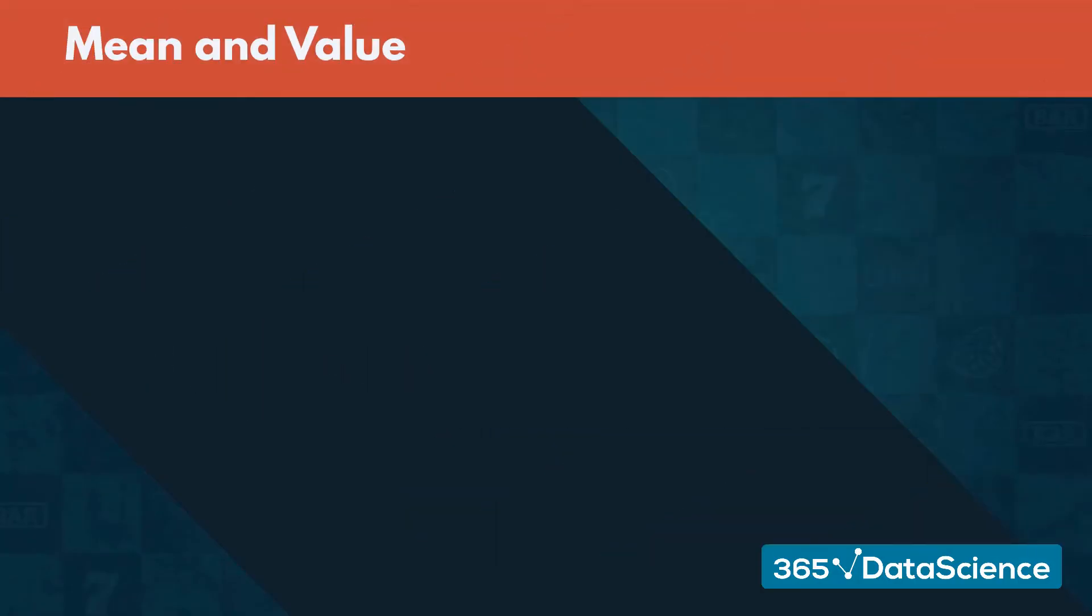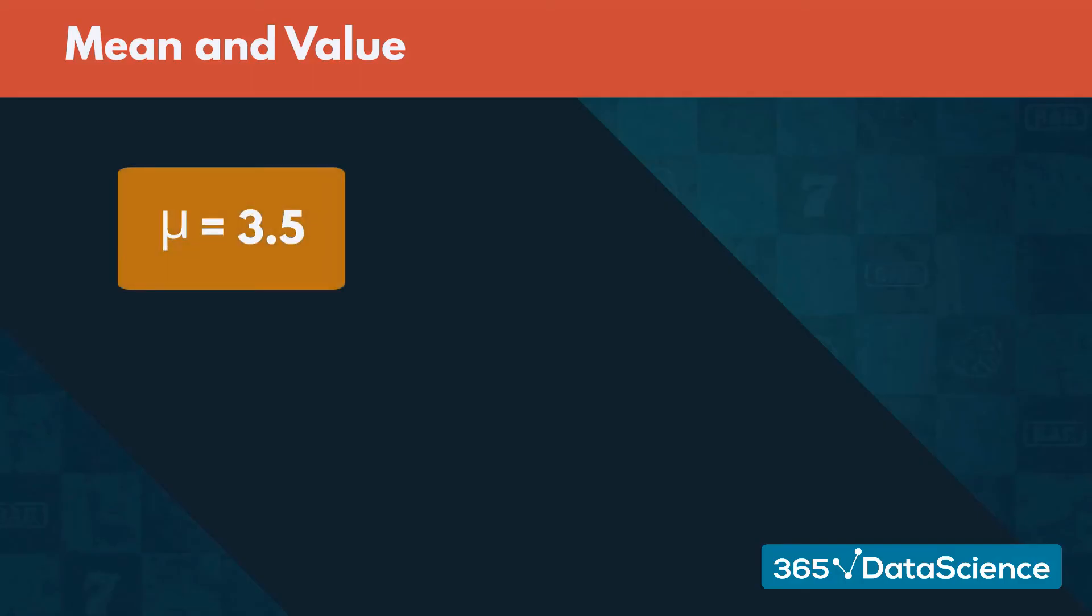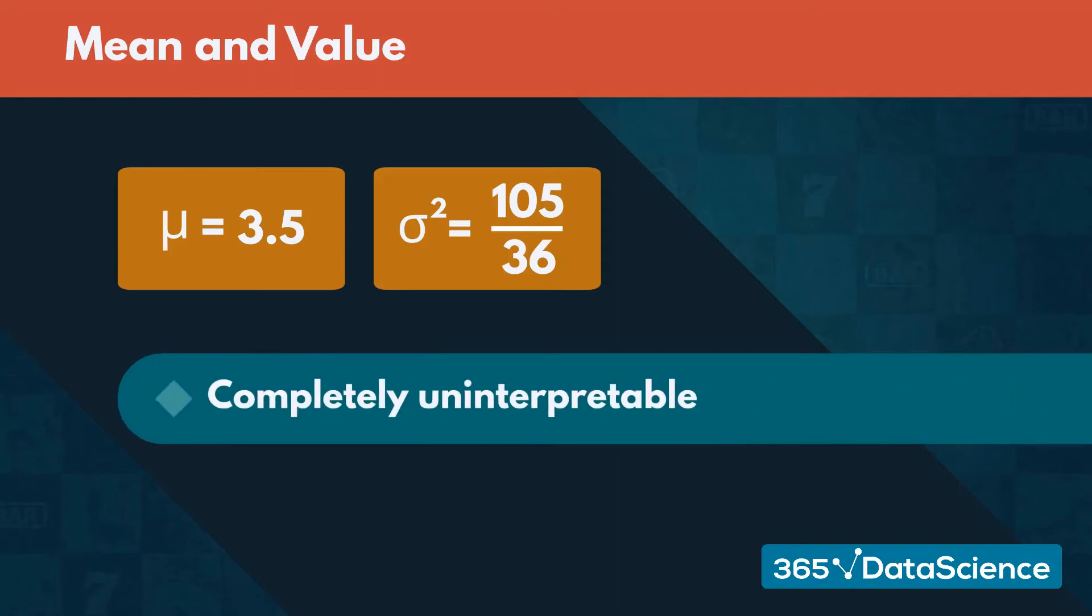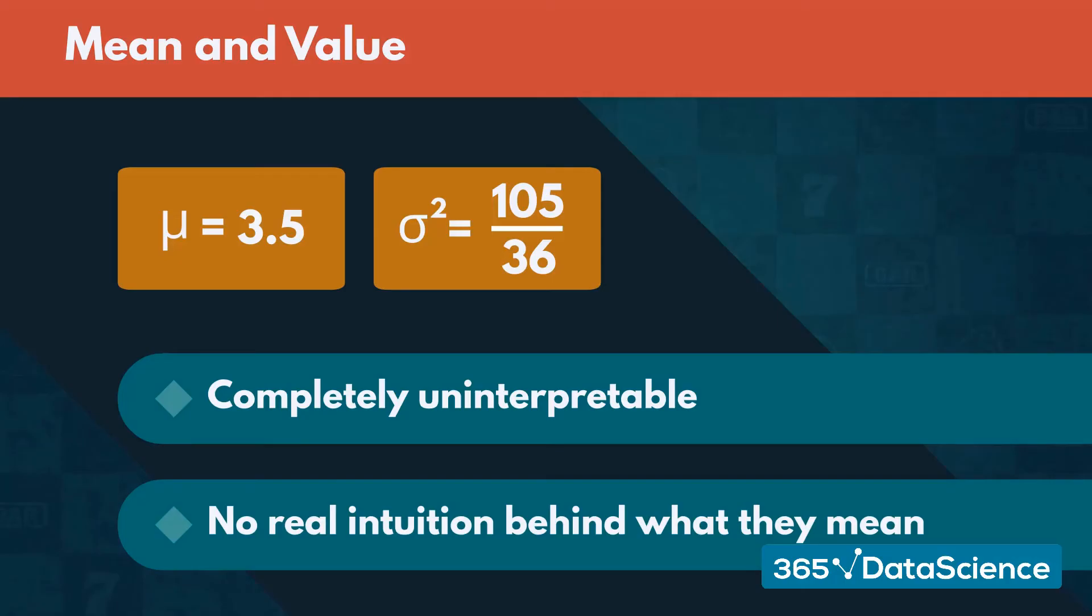We can still apply the formulas from earlier and get a mean of 3.5 and a variance of 105 over 36. These values, however, are completely uninterpretable and there is no real intuition behind what they mean.